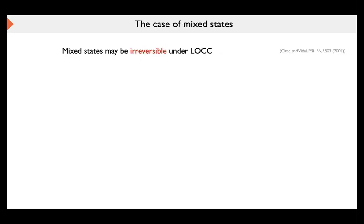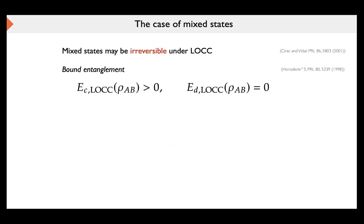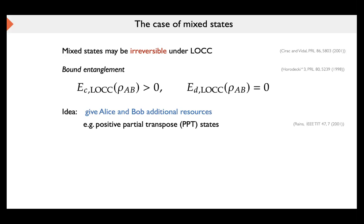This shows that pure states are reversible: for every pair of pure states we can reversibly convert them, and the rate of conversion is given by the ratio of their entropy of entanglement. We obtain the entropy of entanglement as a unique function governing conversion of quantum states. However, for mixed states this no longer holds true — mixed states may be irreversible under LOCC. There is a phenomenon of bound entanglement: entangled states from which no entanglement can be extracted at all.